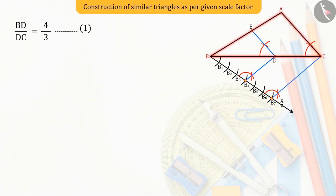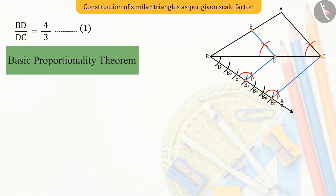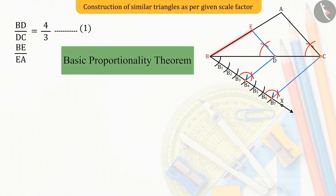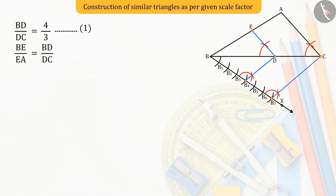And in triangle ABC, ED and AC are parallel. Hence, from the basic proportionality theorem, BE upon EA is equal to BD upon DC, which is equal to 4 upon 3.